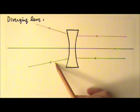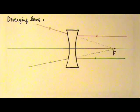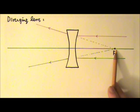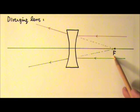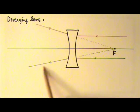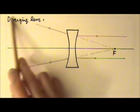These two rays do not go through the focal point. However, their extensions do meet at this point back here. So this point here is the focal point. Because this lens diverges light, it is called a diverging lens.